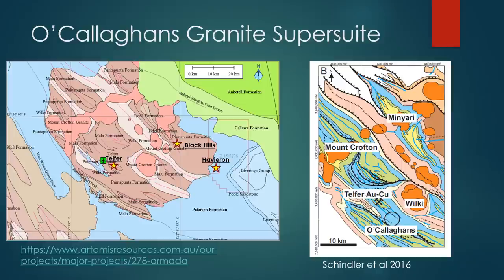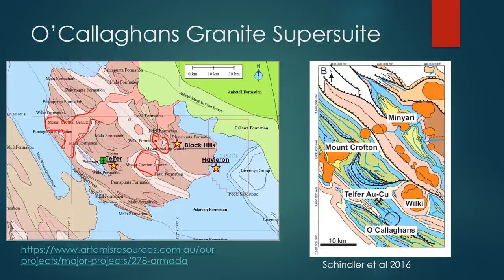So let's talk about the granites in more detail. On the left we have a diagram from the ATW Resources website showing a zoomed-in version of the Patterson Orogen where we're hosting the mineralisation — these isolated red blobs are the granites in the region. Collectively these granites are known as the O'Callaghan Granite Super Suite, but in reality these are individual granite episodes that have been grouped together under that name. These individual granites are illustrated on the right from a more recent paper.